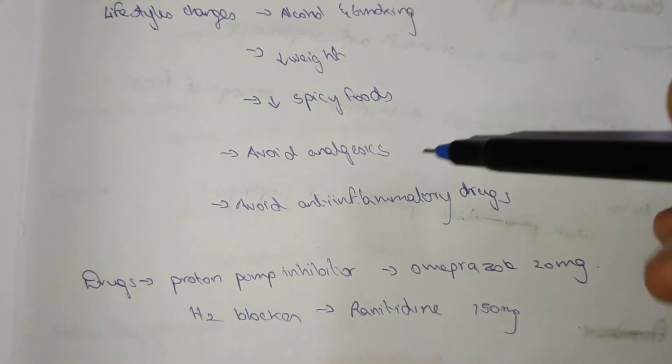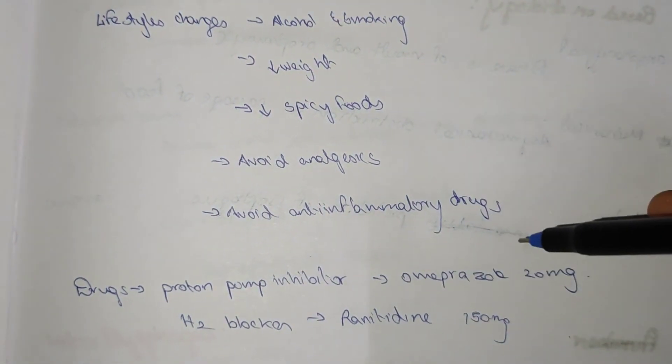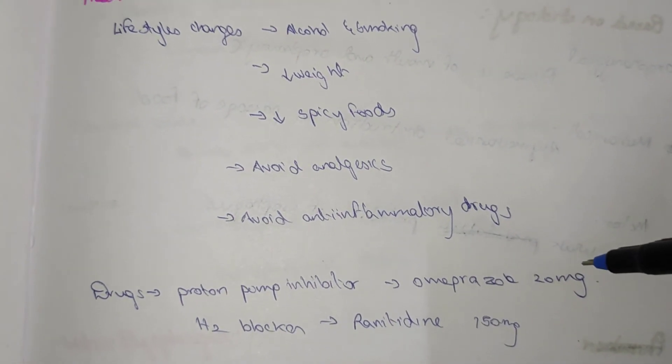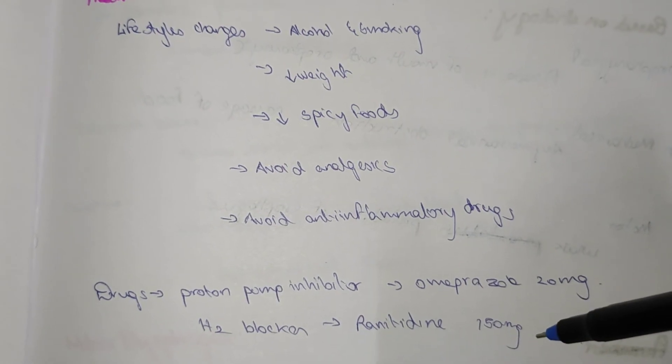The drugs given are two. Caregivers are proton pump inhibitors, which is omeprazole 20 milligrams, and the H2 blockers, which is ranitidine 150 milligrams. These are the drugs which are given for treatment of GERD.